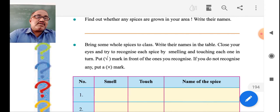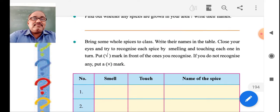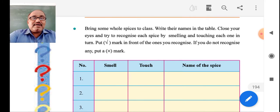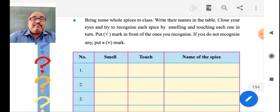Bring some whole spices to class. Write their names in the table. Close your eyes and try to recognize each spice by smelling and touching each one in turn. Mark in front of ones you recognize. If you do not recognize, put a cross mark.